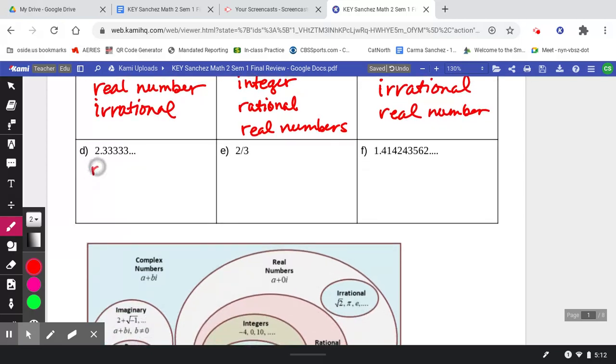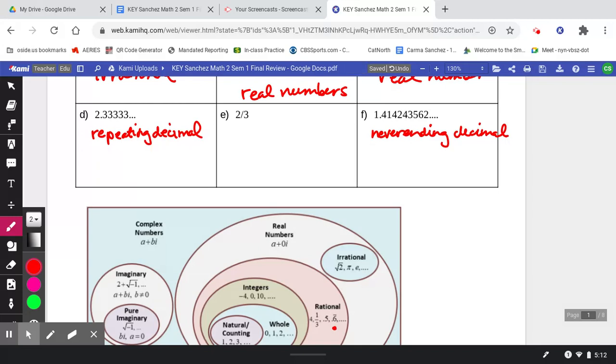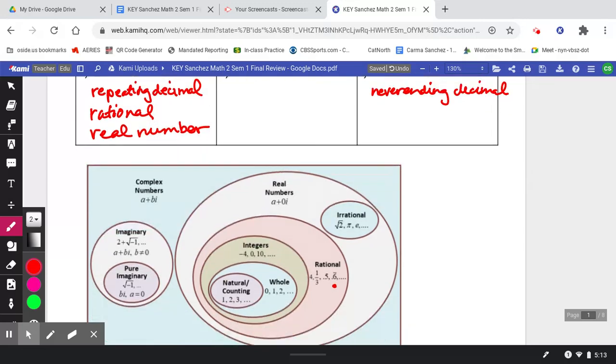All right, how about a repeating decimal? Compared to down here, letter F is a never-ending decimal. Please note that repeating decimals fall over here under rational numbers. So I could say that this is a rational number. I could also say it's a real number. A repeating decimal falls within rational.